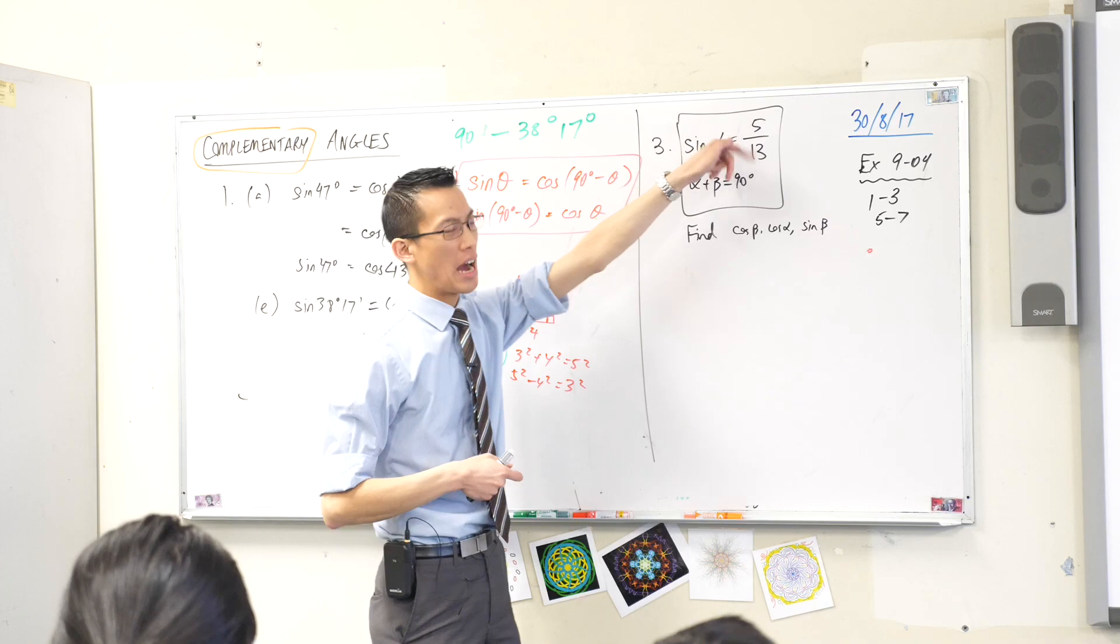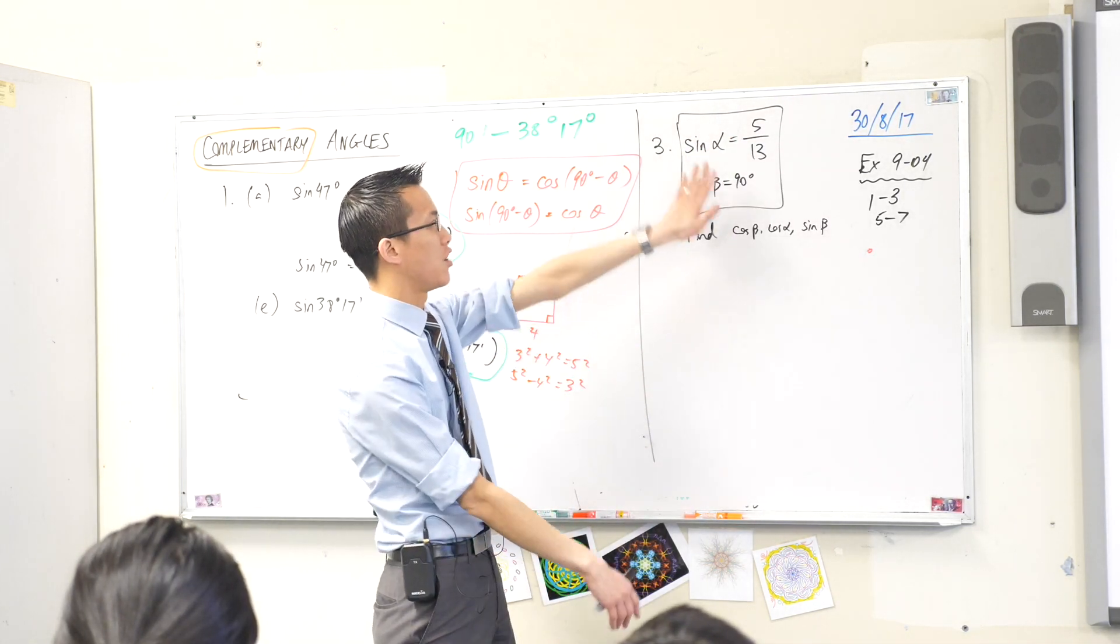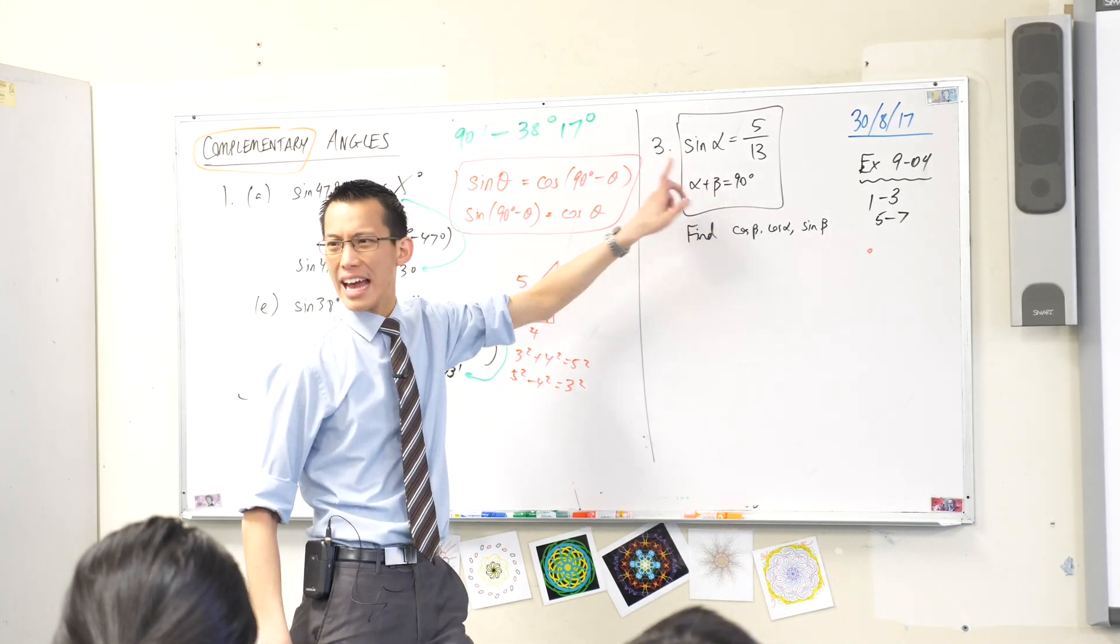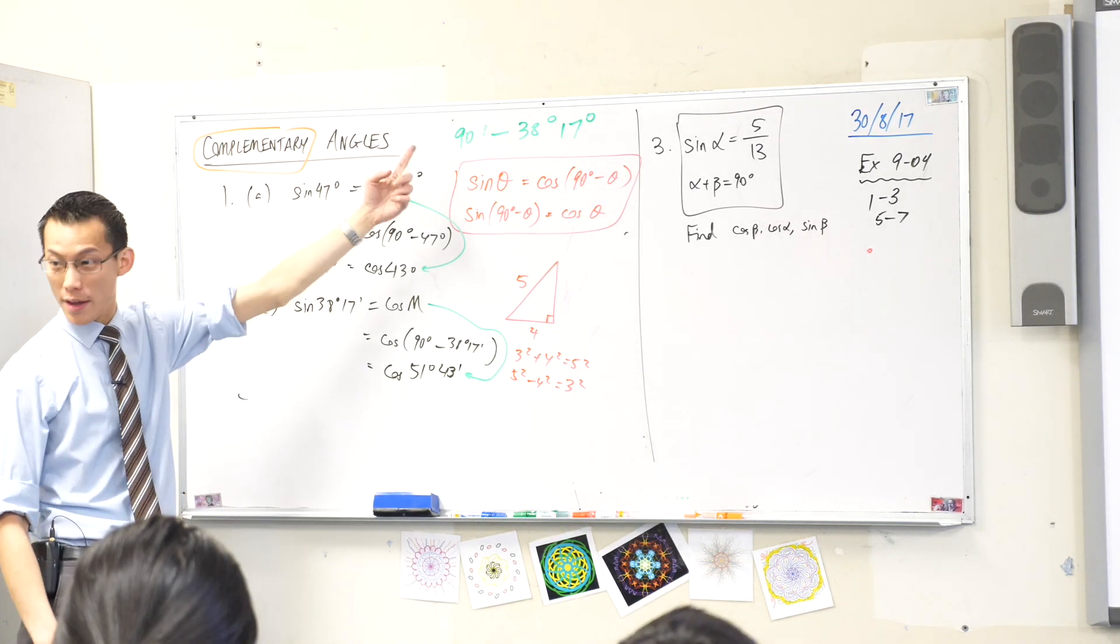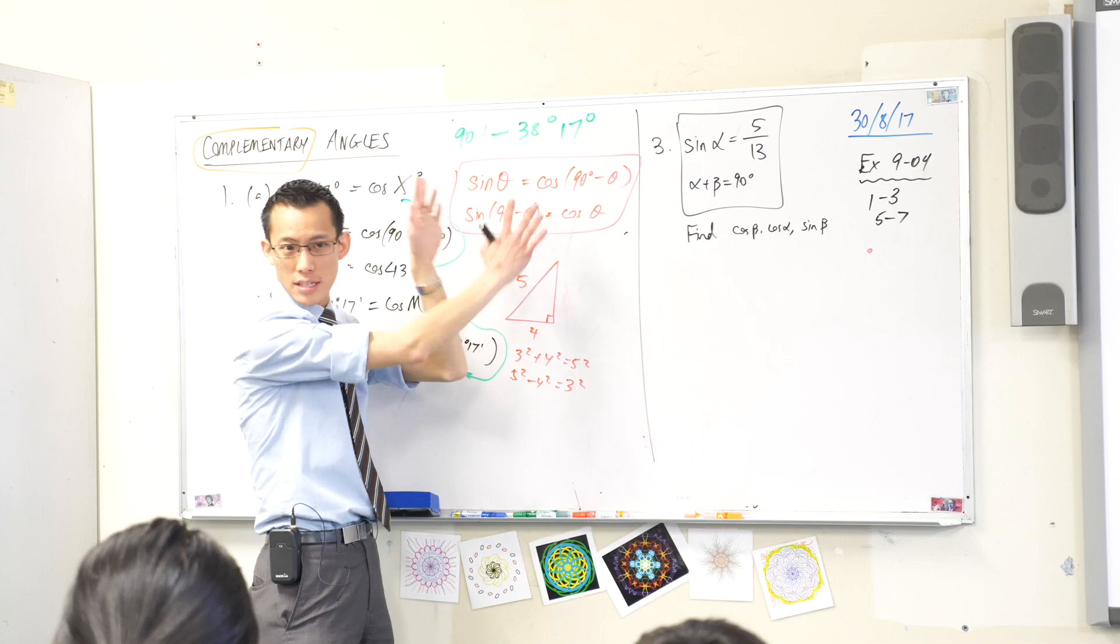Sine alpha equals 5 on 13. They tell you what this ratio is, you don't know what alpha is, it's some angle, and then they tell you that alpha and beta are complementary angles. That's a signal to you that you can use this information.